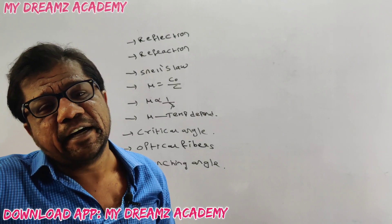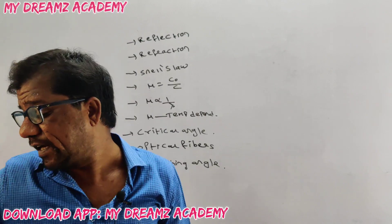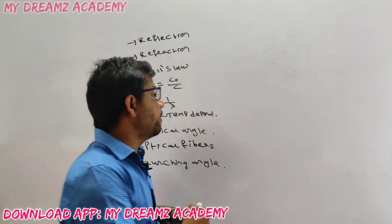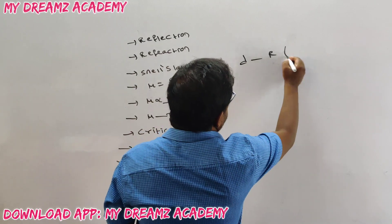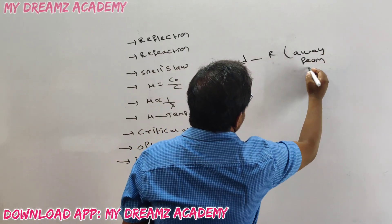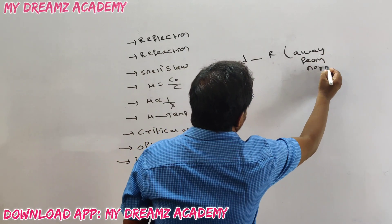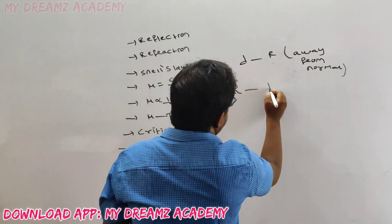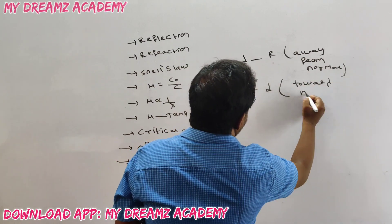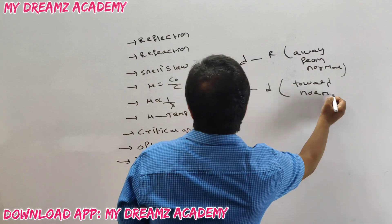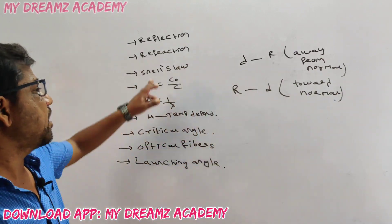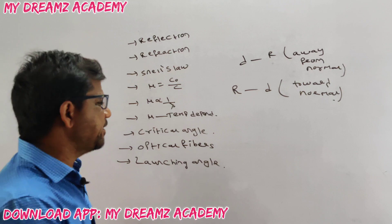Important theory: when light moves from a denser medium to a rarer medium, it bends away from the normal. When light moves from a rarer medium to a denser medium, it bends towards the normal. This is important for theory questions.